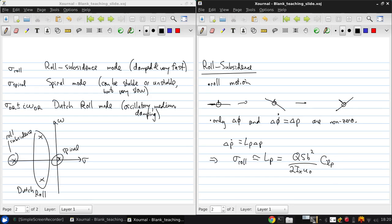So what is CLp? C is the coefficient of L, which is the x-moment, so the roll moment, with respect to the roll angular velocity.